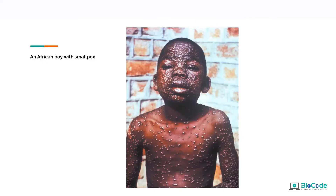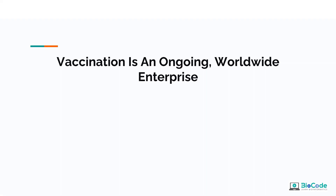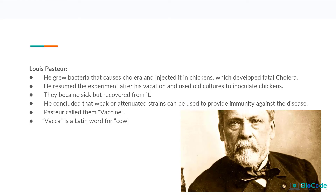Here you can see an African boy with smallpox — vaccination is an ongoing worldwide enterprise. Louis Pasteur grew bacteria that could cause cholera and injected it into chickens, which developed fatal cholera. After returning from vacation and using old cultures to inoculate chickens, he saw they became sick but recovered. He concluded that weak or attenuated strains could provide immunity, and named them vaccines — from the Latin word for cow — in honor of Jenner's work on cowpox.